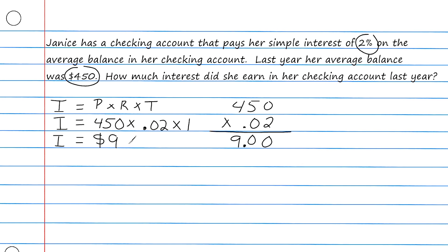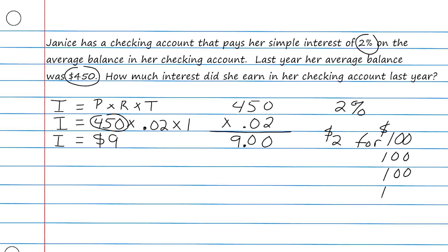We've determined that Janice accumulated $9 of interest over the course of a year. This problem also could have been solved mentally. A percentage is out of 100, so Janice collects $2 for every $100 in her account. She has $450 — four full groups of 100 and half a group — giving her $2, $2, $2, $2, plus $1 for the half, totaling $9.